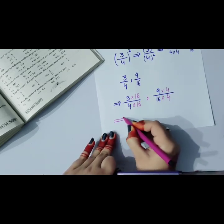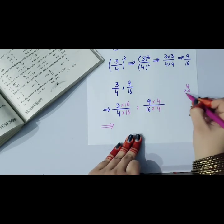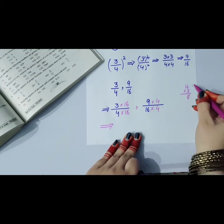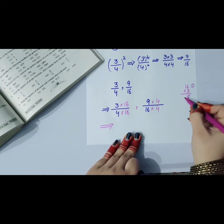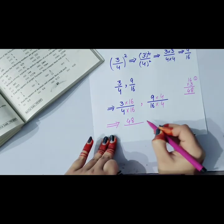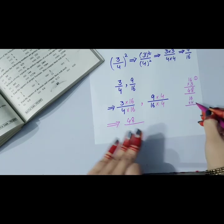Now we have to compare: 3 by 4 versus 9 by 16. To compare, make denominators the same. Multiply 3 by 16 equals 48, and multiply 16 by 4 equals 64.